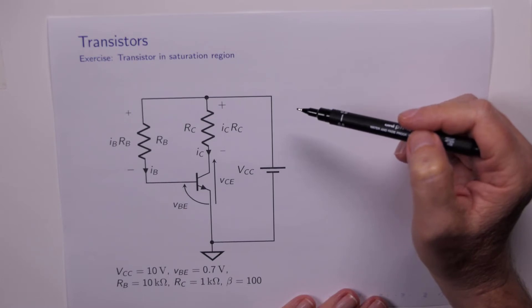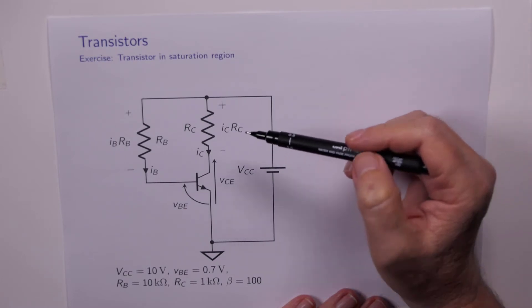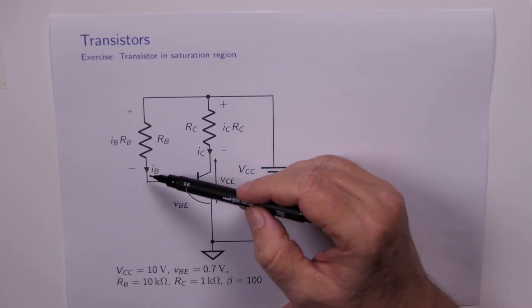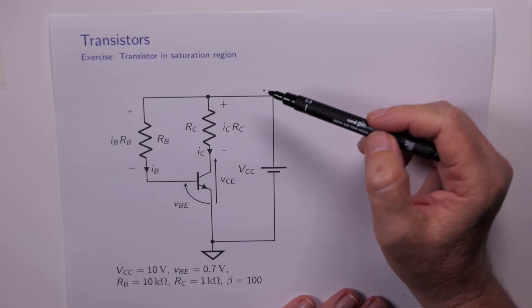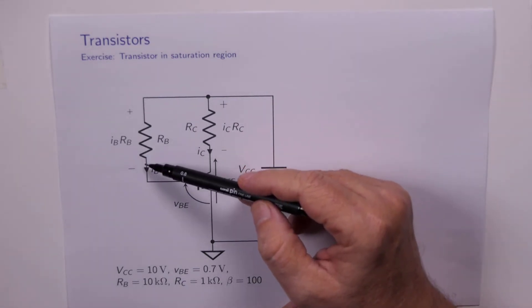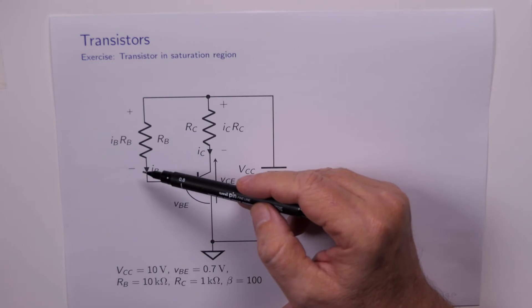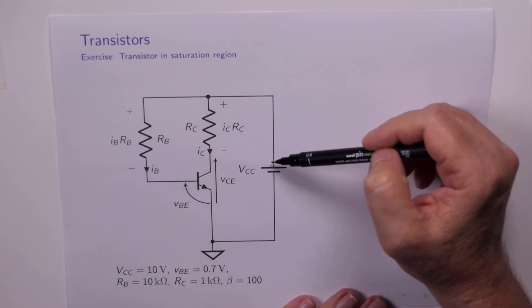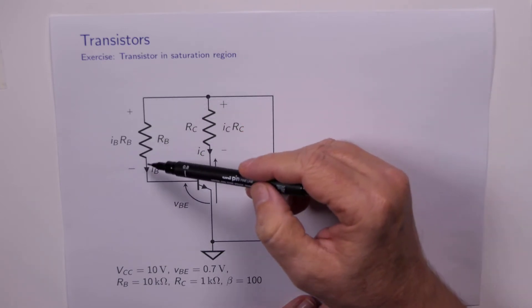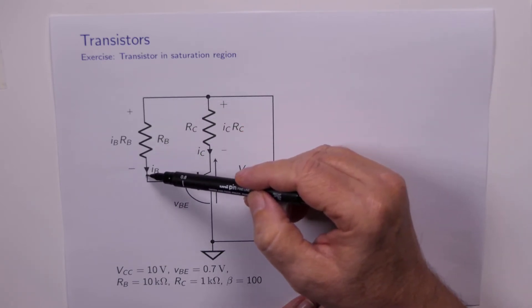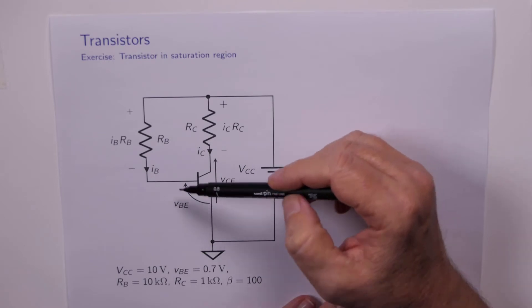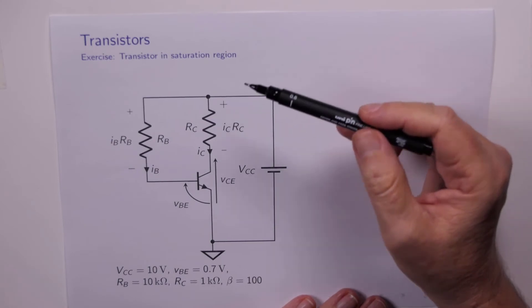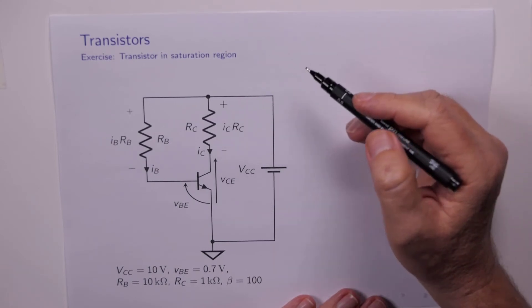Can we figure out which region of operation the transistor is in just by staring at this? Well, we can probably rule out cutoff, because if the transistor was in cutoff, then IB would be 0. If IB is 0, then the voltage dropped across there is 0, which means the voltage here is the same as the voltage there.